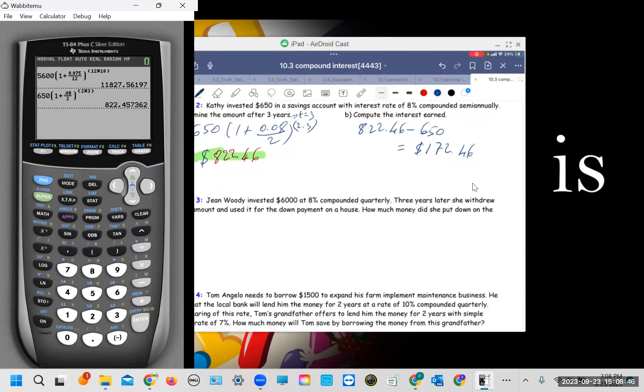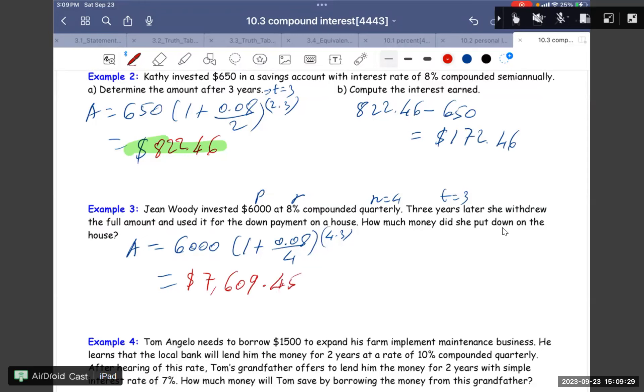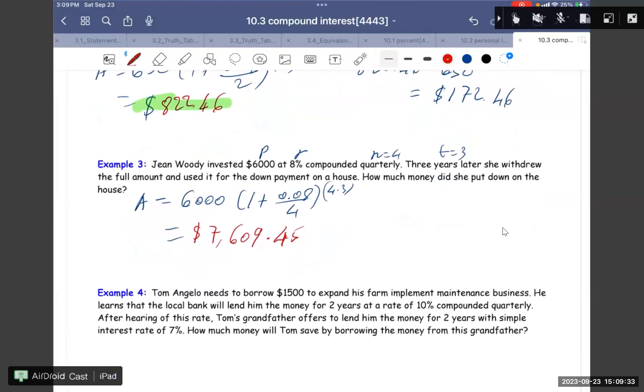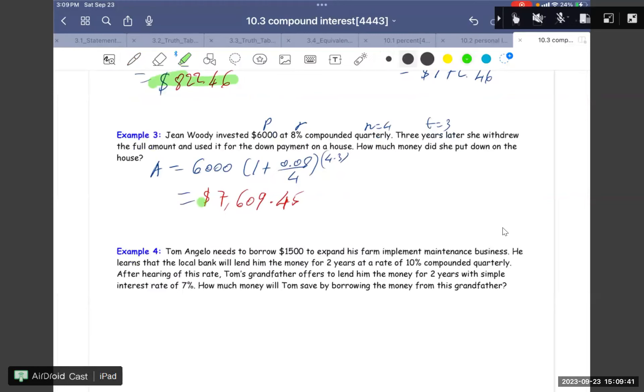And then now, I know you can do it. So that's something for number three. So we have this one is the P, this one is R, this one is quarterly so N is 4, this one is the T which is 3. So we got A equals 6000 times (1 plus 0.08 divide 4) to the power of (4 times 3). So I don't want to waste the time again. I know you guys know how to do it. So this one is $7,609.45. So that's how much she put down for the money.